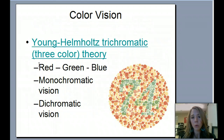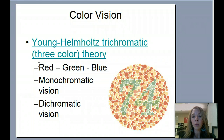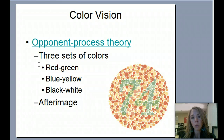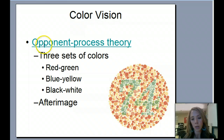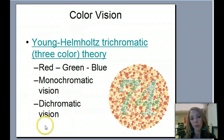As a review: the Young-Helmholtz Trichromatic Theory involves red, green, and blue receptors, and explains why people are colorblind to certain colors. The opponent processing theory involves sets of opposing colors — red-green together, blue-yellow together, black-white. Make sure you know that afterimages are associated with the opponent processing theory. Monochromatic and dichromatic vision are explained by the trichromatic theory.